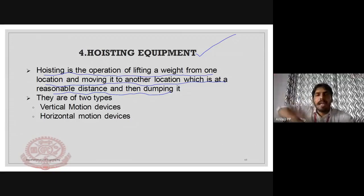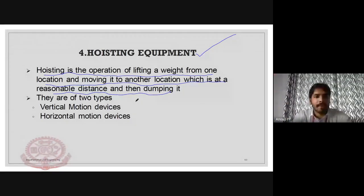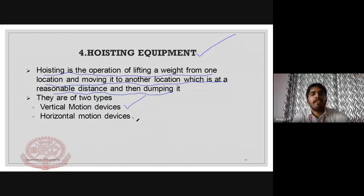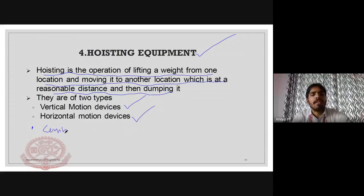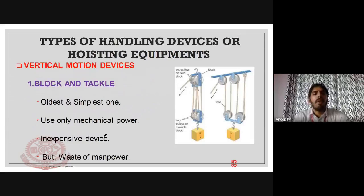There are two main types of motions in hoisting: vertical motion devices and horizontal motion devices. There is also a third category — combination devices. So there are three categories of hoisting equipment in total.